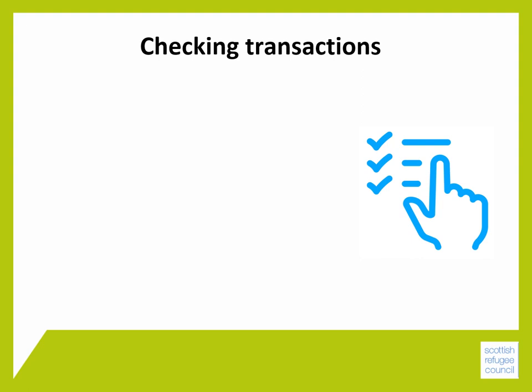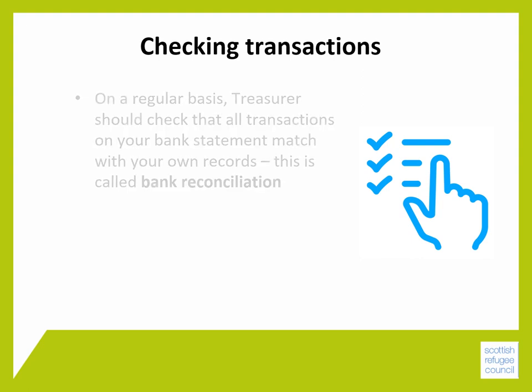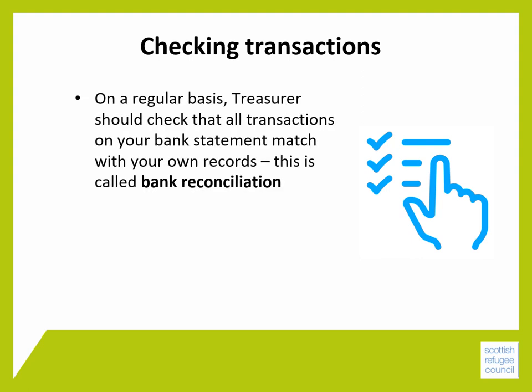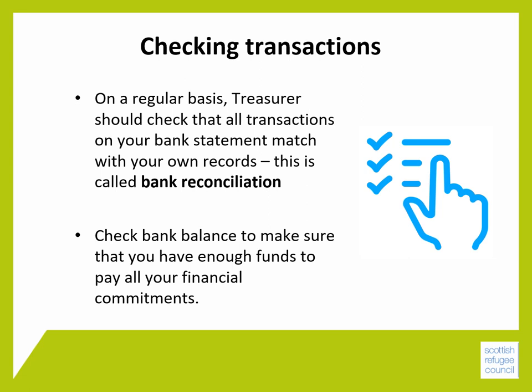On a regular basis — for example, every month — your treasurer, or it could be a member of staff, should check that all the transactions on your bank statement match with your own records. This is called bank reconciliation. Your treasurer should also check the bank balance to make sure that you have enough funds to pay all your financial commitments.